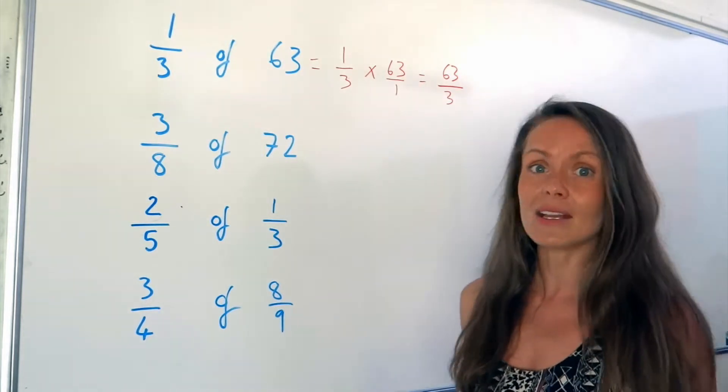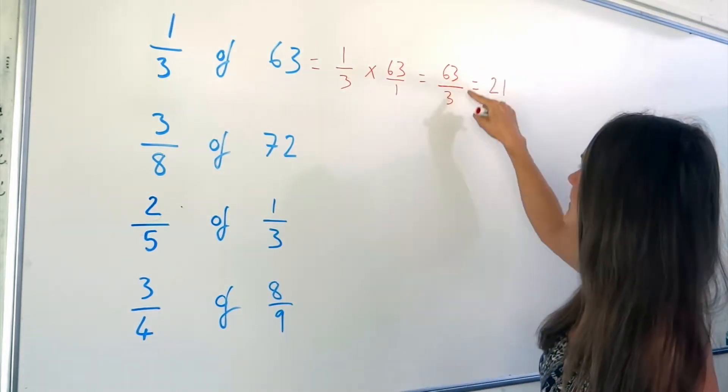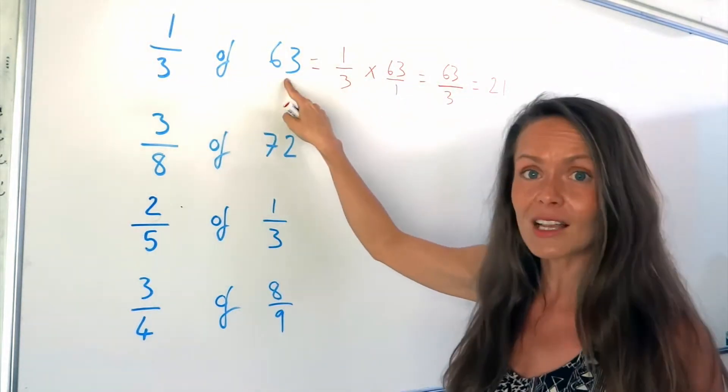In fact, 63 is divisible by 3. It divides exactly. So the answer, when we divide 63 by 3, is 21. So 21 is one third of 63.